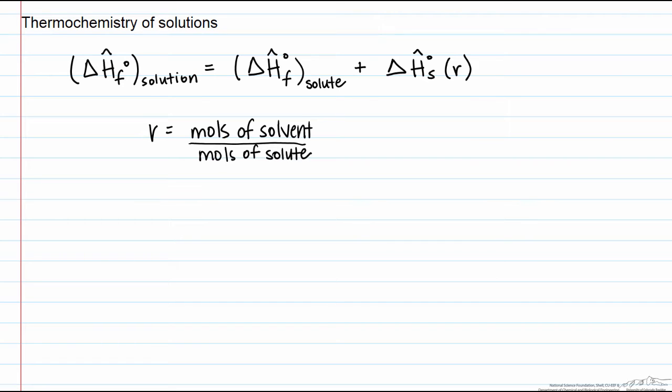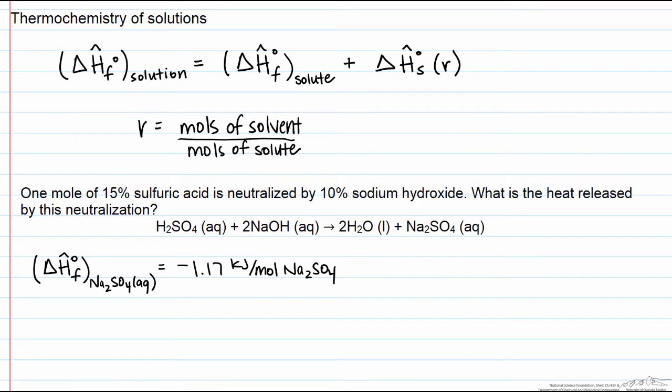Let's take a look at a typical example. We have sulfuric acid, and it's going to be neutralized by sodium hydroxide, and that's going to leave us with water and a salt, sodium sulfate.